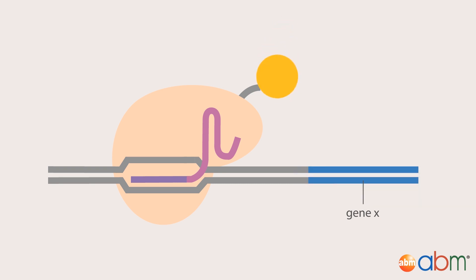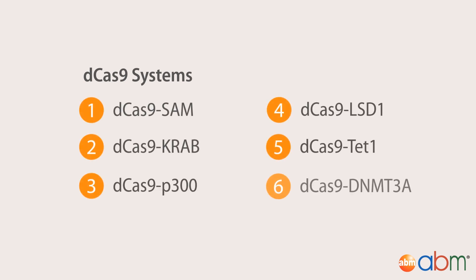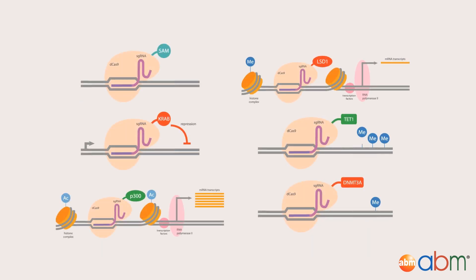In the near future, dCas9 fusions can be used to selectively turn genes on or off in an effort to treat disease, making it a powerful and transformative tool to spur the development of molecular therapeutics. The dCas9 systems described in this video are only just the beginning of what will no doubt soon be a full and comprehensive suite of tools that could allow you to perform just about any reversible DNA manipulation you can dream of.